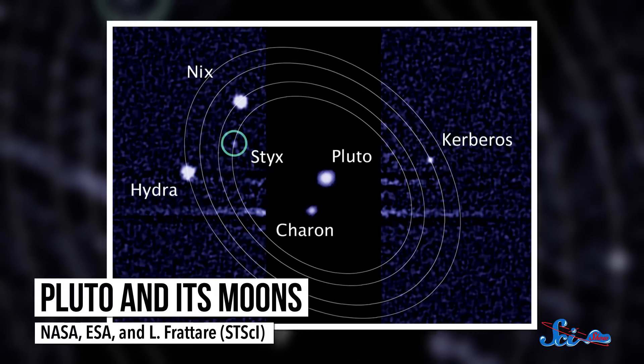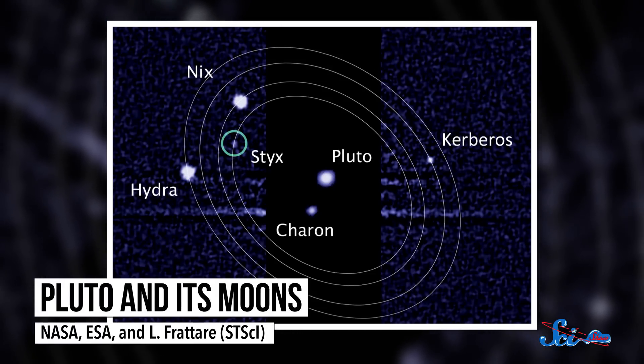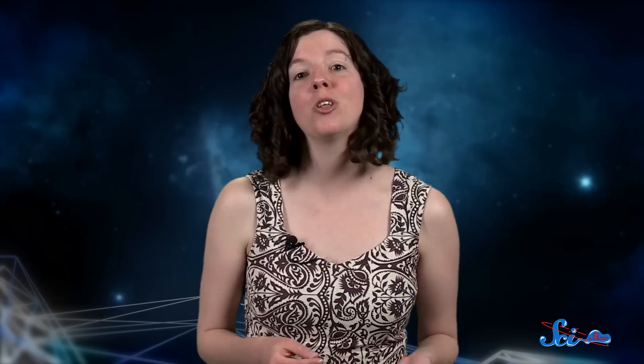The ice caps are just the beginning of what New Horizons will be able to tell us as it gets closer. There is a lot that we still don't know about Pluto, like whether it has a magnetic field, or faint rings, or even if we've found all of its moons. New Horizons will help us answer those questions, and will also map the dwarf planet's far side for the very first time. A few months from now, we'll know a whole lot more about that cold, icy world than we ever did before.